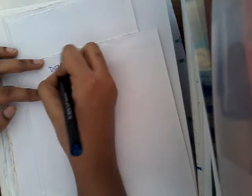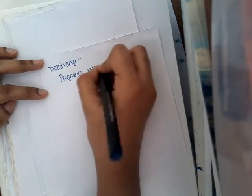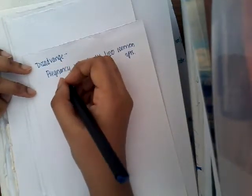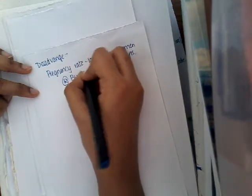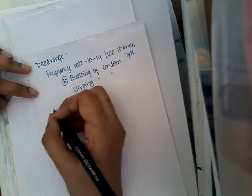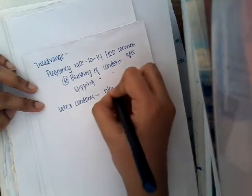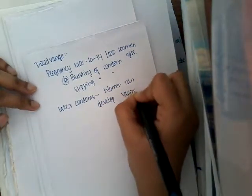Now, what are the disadvantages of condoms? The main disadvantage is that the pregnancy rate is around 10 to 14 per 100 women-years — meaning among 100 women, 10 to 14 can get pregnant. The main reasons for this are bursting of the condom or slipping of the condom. For latex-based condoms, women can also develop vaginal irritation.